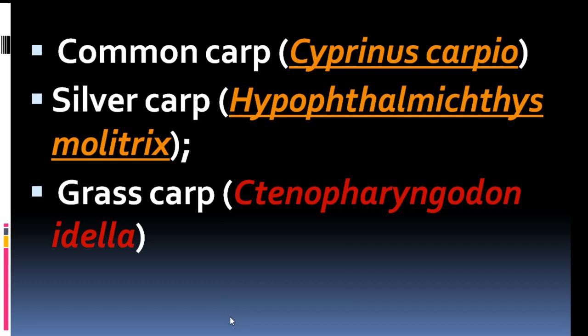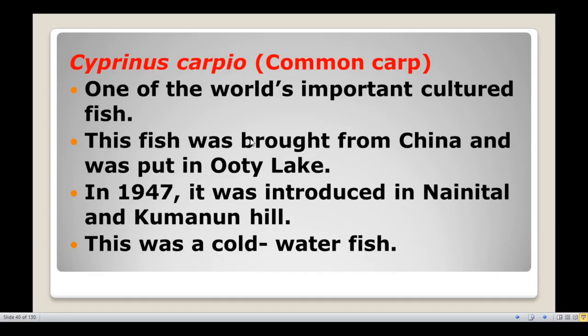The first one is Common Carp, scientifically known as Cyprinus carpio. Silver Carp is Hypophthalmichthys molitrix. Grass Carp is Ctenopharyngodon idella. So we have three exotic carp species. Cyprinus carpio, the Common Carp, is one of the world's most important cultured fish.